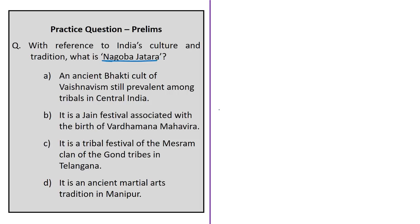The next question asks what Nagoba Jatra is with reference to India's culture and tradition. The options are: an ancient Bhakti culture of Vaishnavism; a Jain festival associated with the birth of Vardhaman Mahavira; a tribal festival of Masaram clan of Gond tribes in Telangana; or an ancient martial arts tradition in Manipur. The correct answer is Option C — it is a tribal festival of the Masaram clan of Gond tribes in Telangana, held in Kesulapur village in Adilabad district.